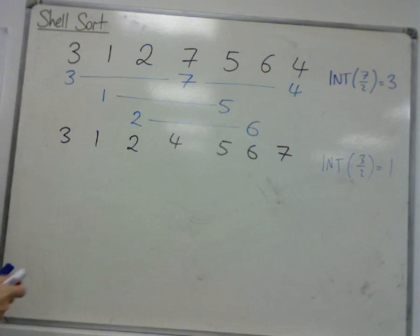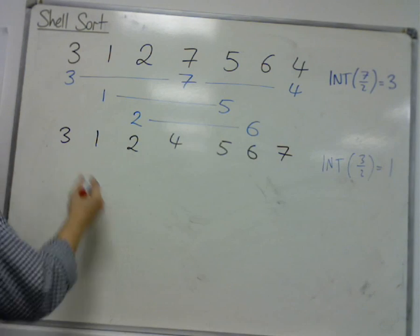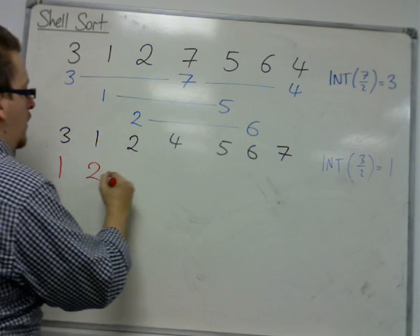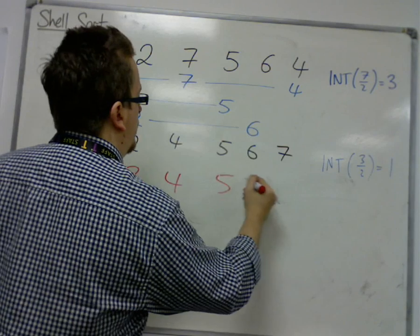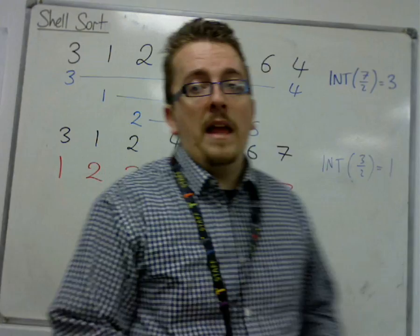So you would then finally shuttle sort the 7 numbers and you'd get 1, 2, 3, 4, 5, 6, 7. And that's where we would get to.